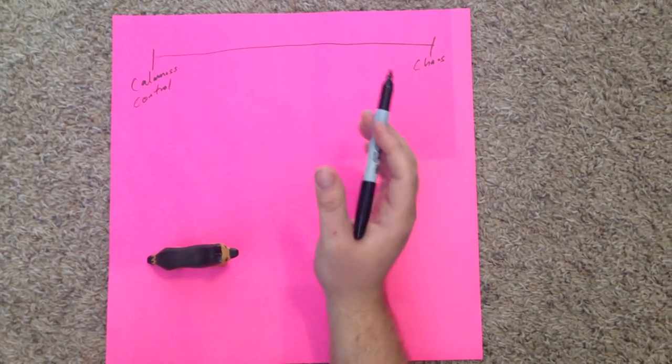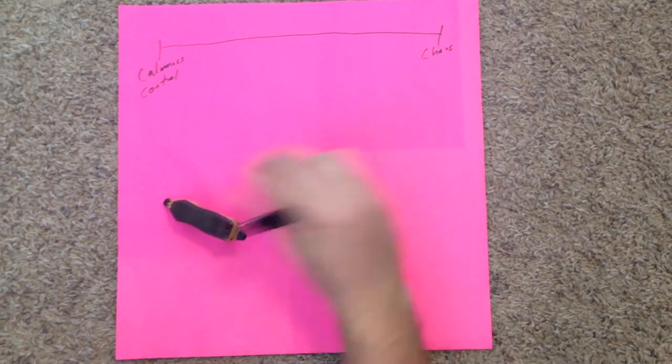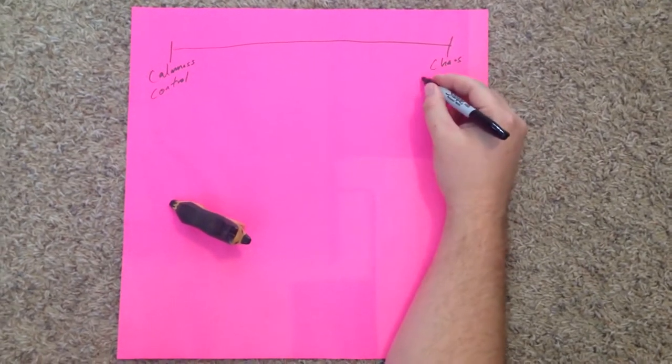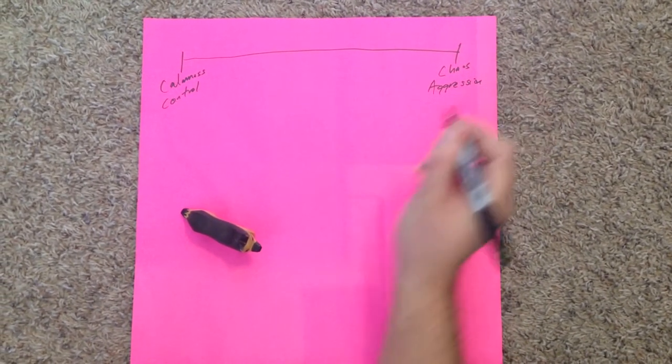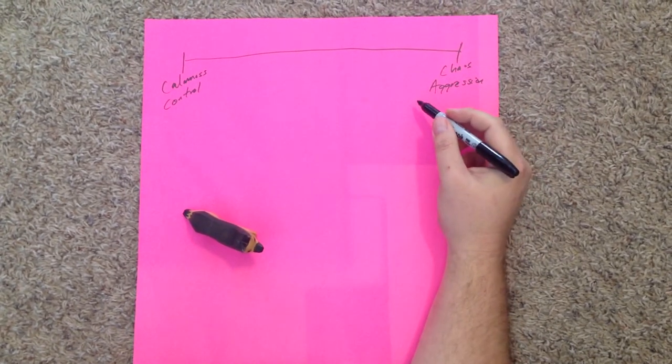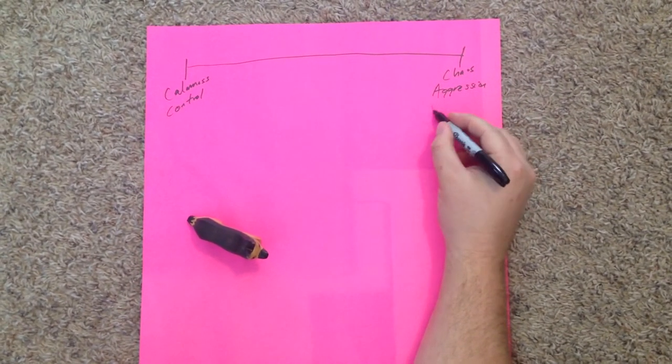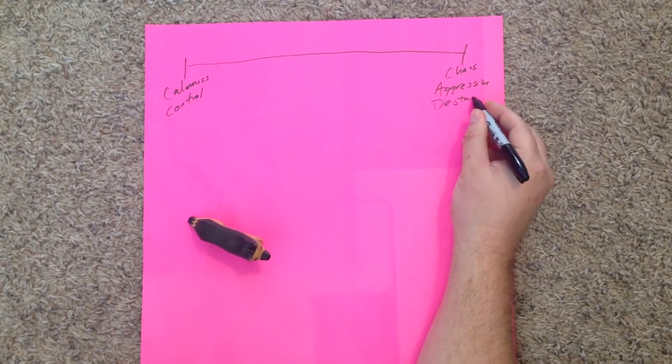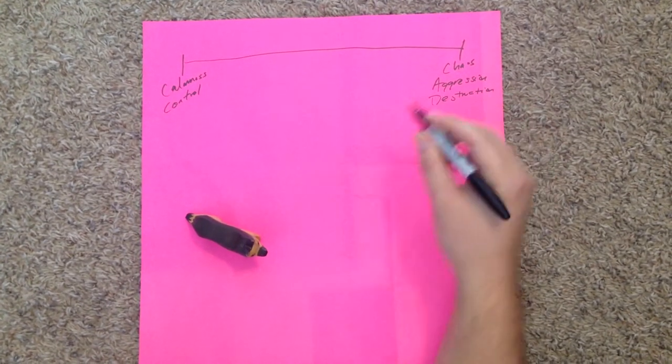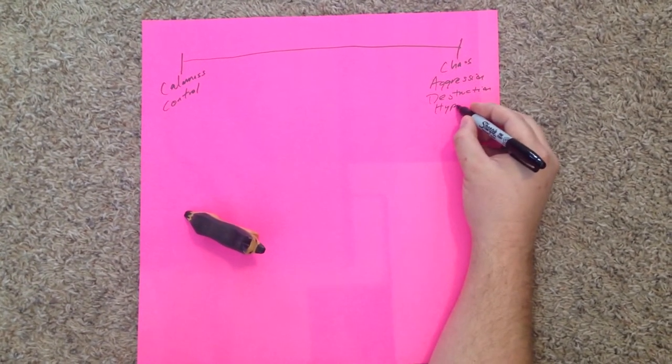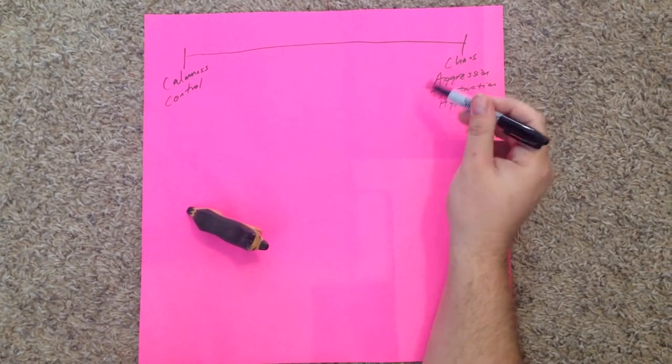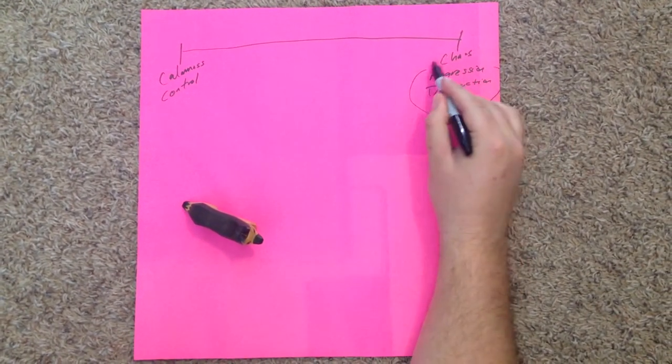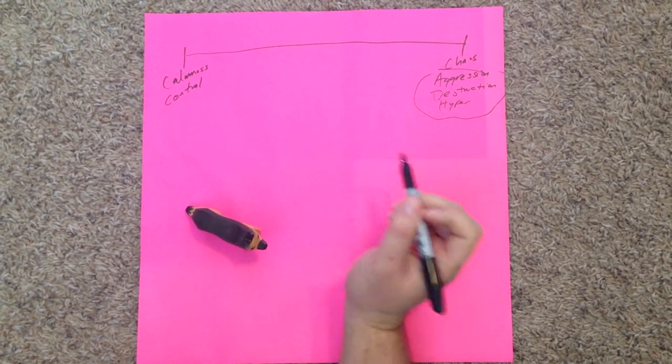And so on this end of the spectrum we've got things like aggression. Aggression is probably the biggest thing that we deal with, the number one problem that we work with at our company. We've got things like destruction, we've got things like hyperactivity, just overall misbehaving, not listening, things like that. All of those behaviors that our clients complain about live on this end of the spectrum.